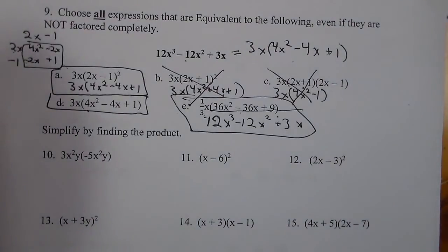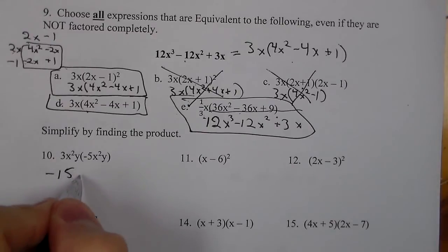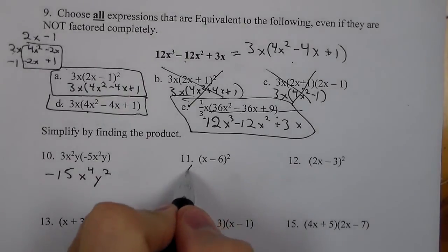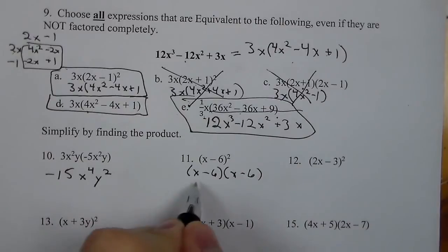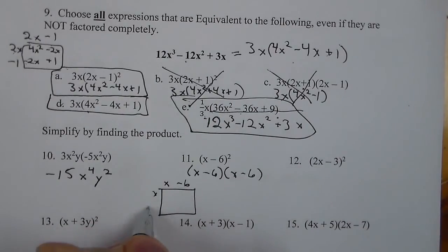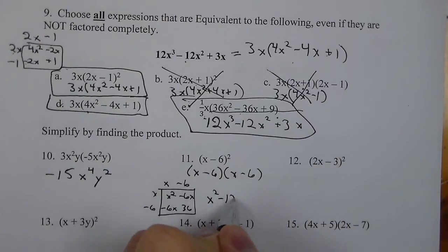For number 10, we're going to multiply and simplify. 3 and negative 5 is negative 15, and we get x to the 4th y squared when we combine exponents. Number 11 is like saying x minus 6 times x minus 6. We draw the box to multiply and get x squared minus 6x minus 6x plus 36, so our answer is x squared minus 12x plus 36.